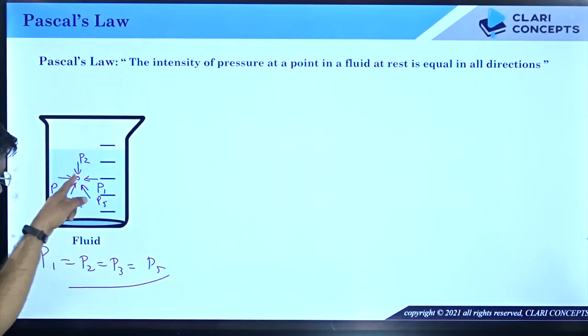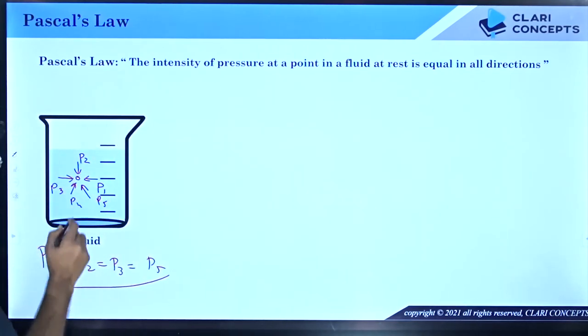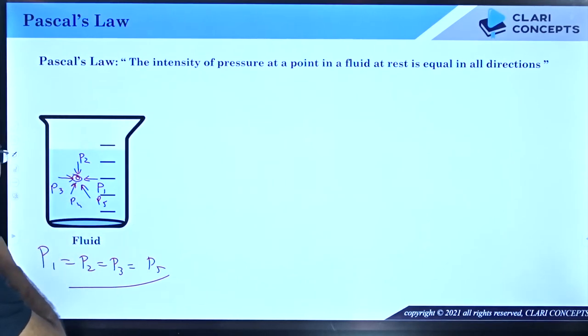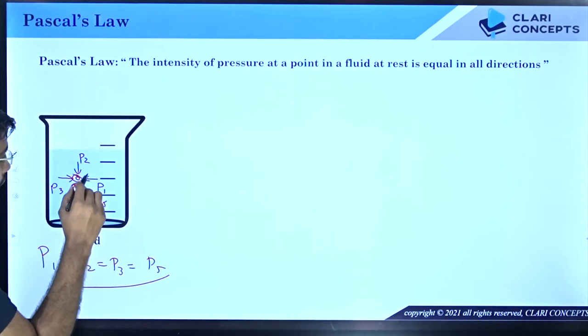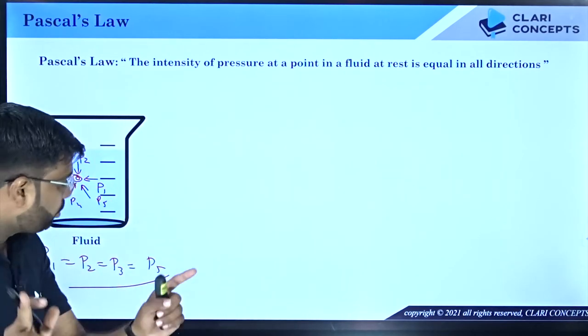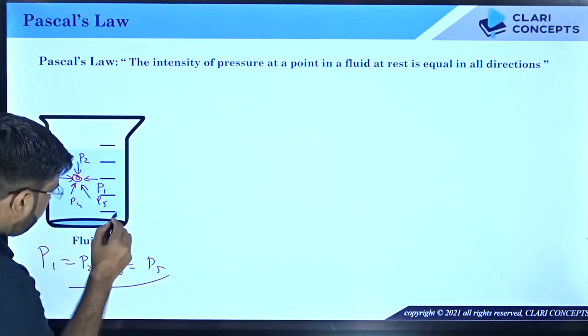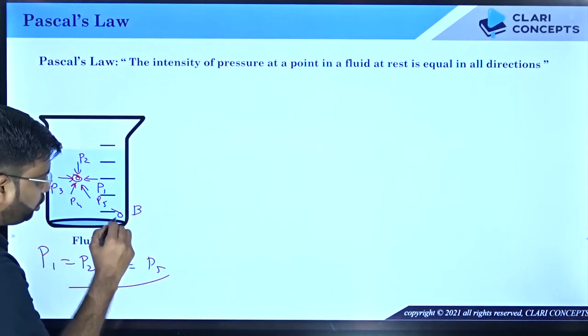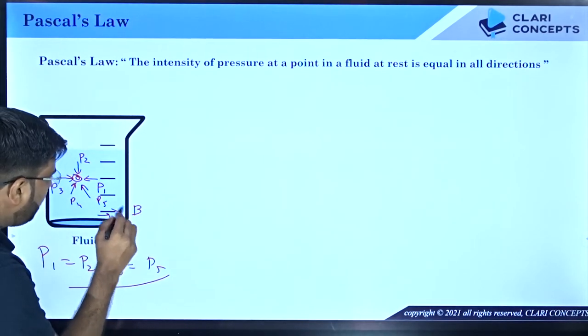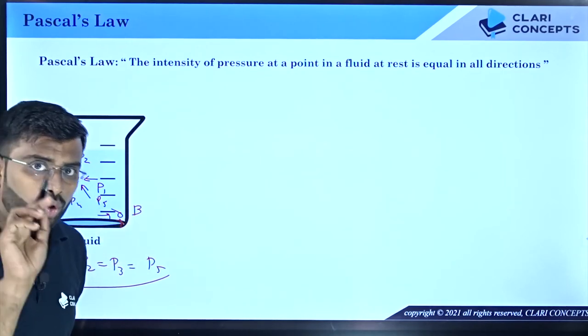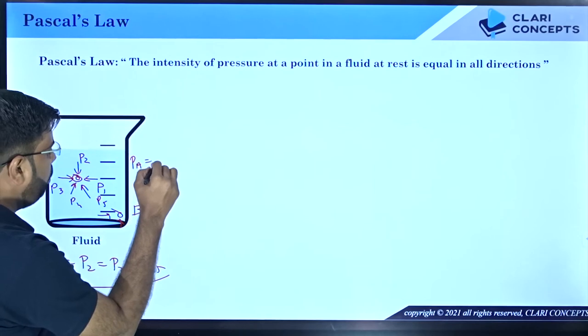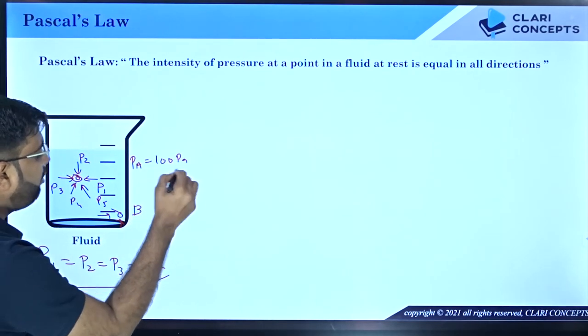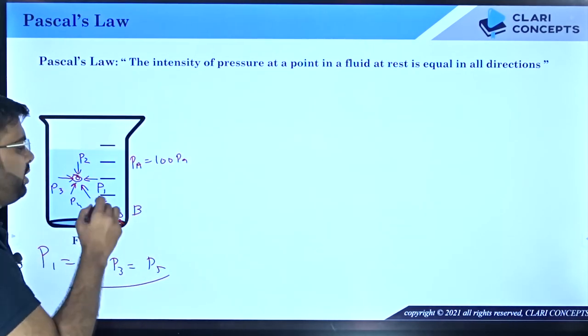The intensity of pressure at any point, means here is a point, suppose point A, so different directions from the pressure. Now Pascal has not said that the pressure at another point here, suppose point B, will be equal to A. He said that the pressure at point A may be 100 Pascal, but this 100 Pascal will be the same from all directions at this point.